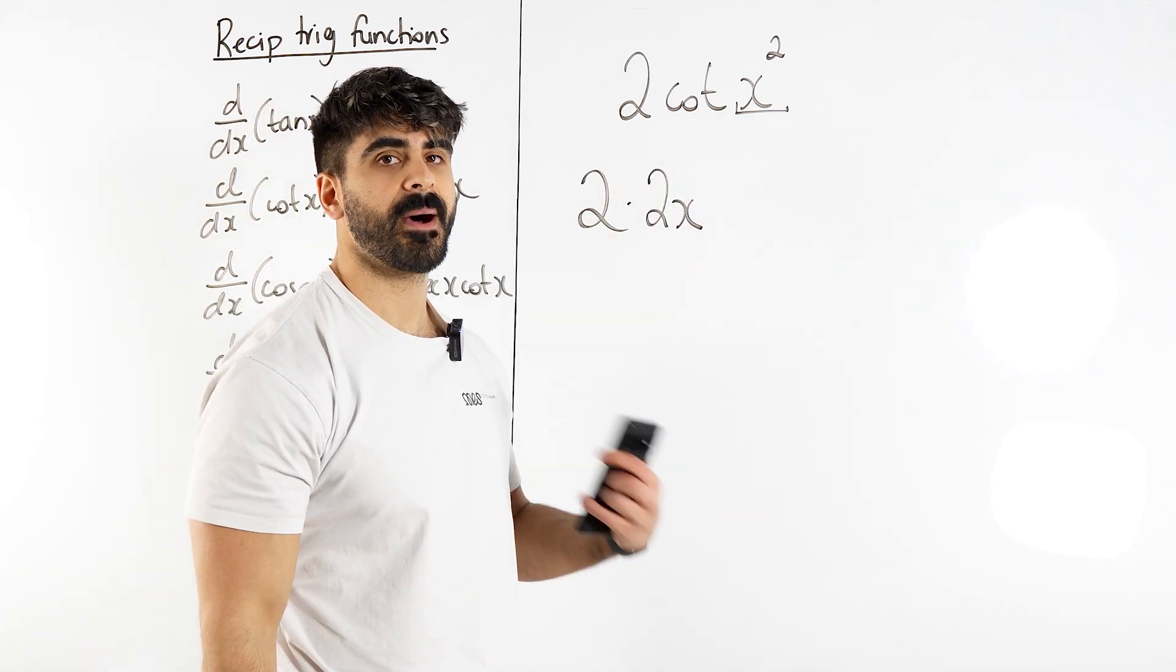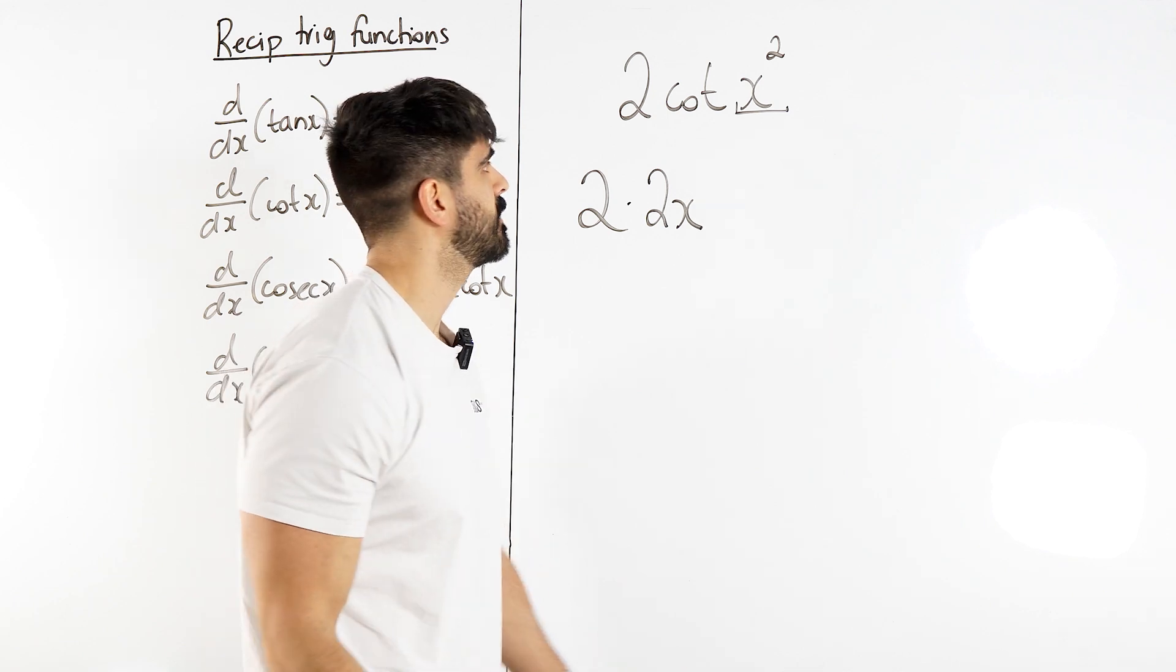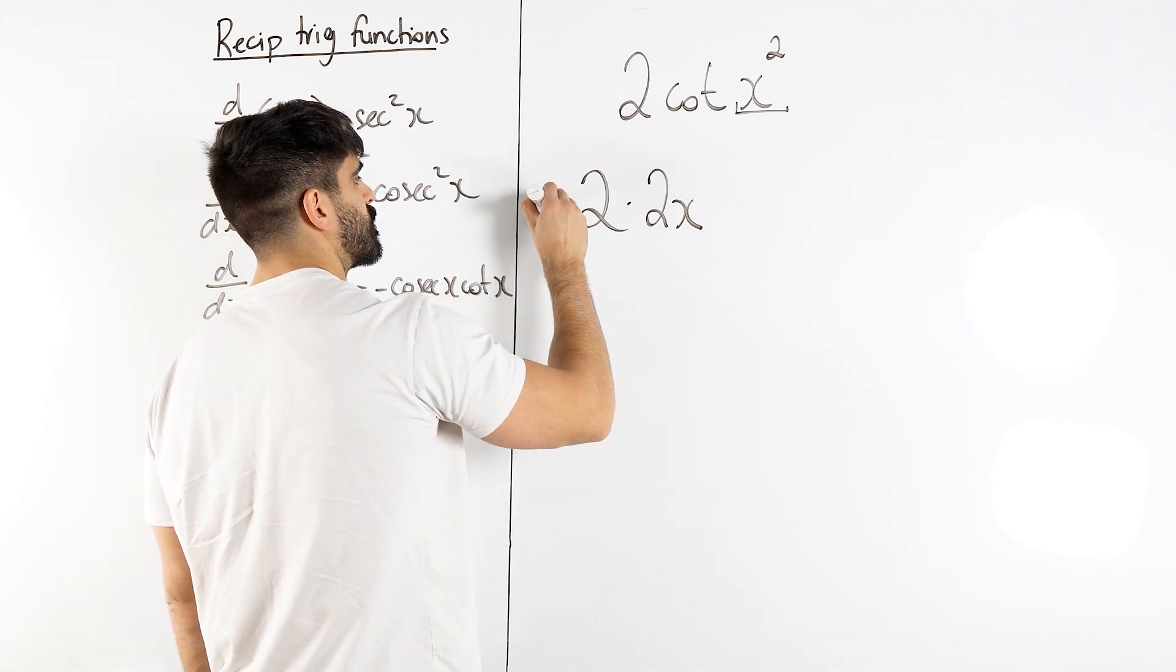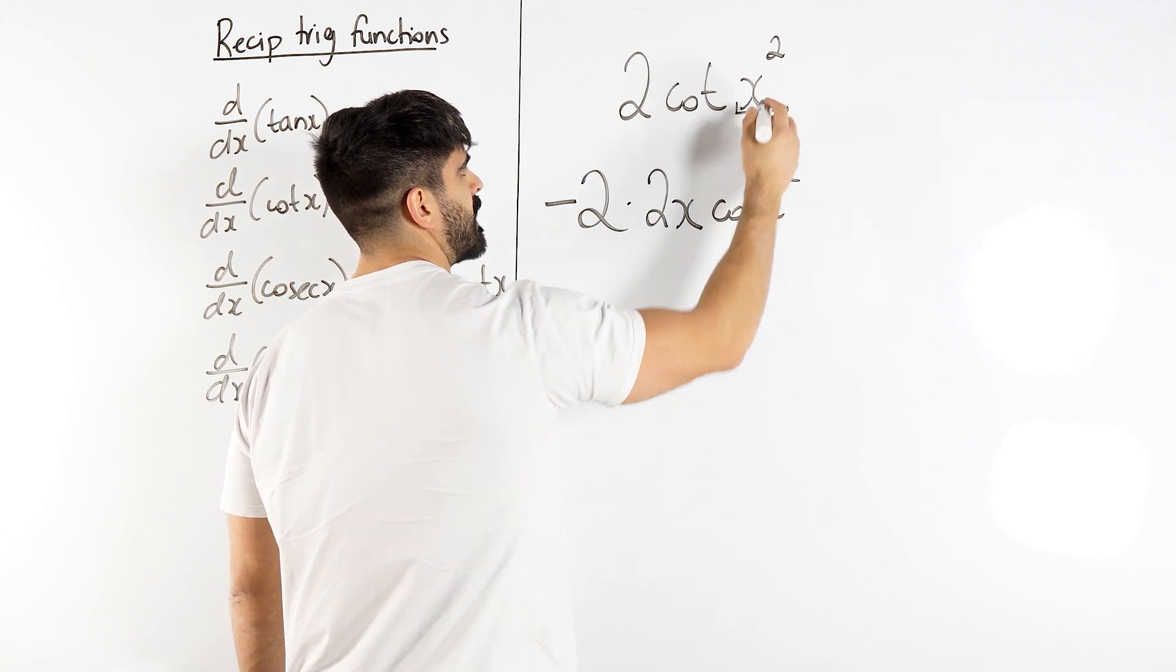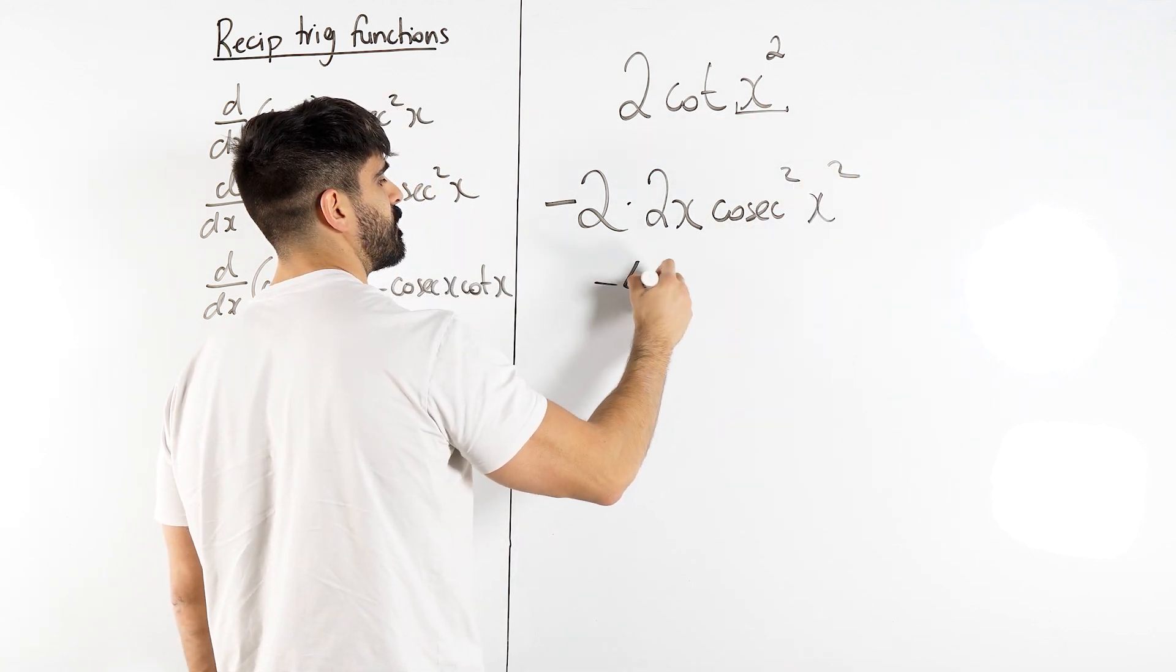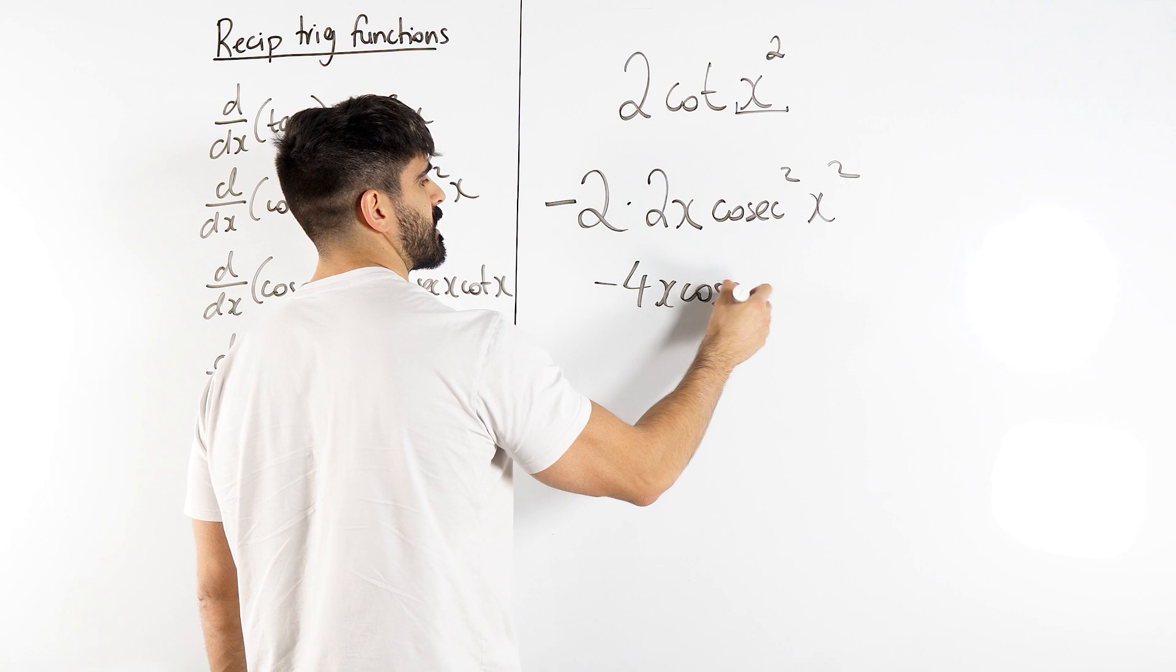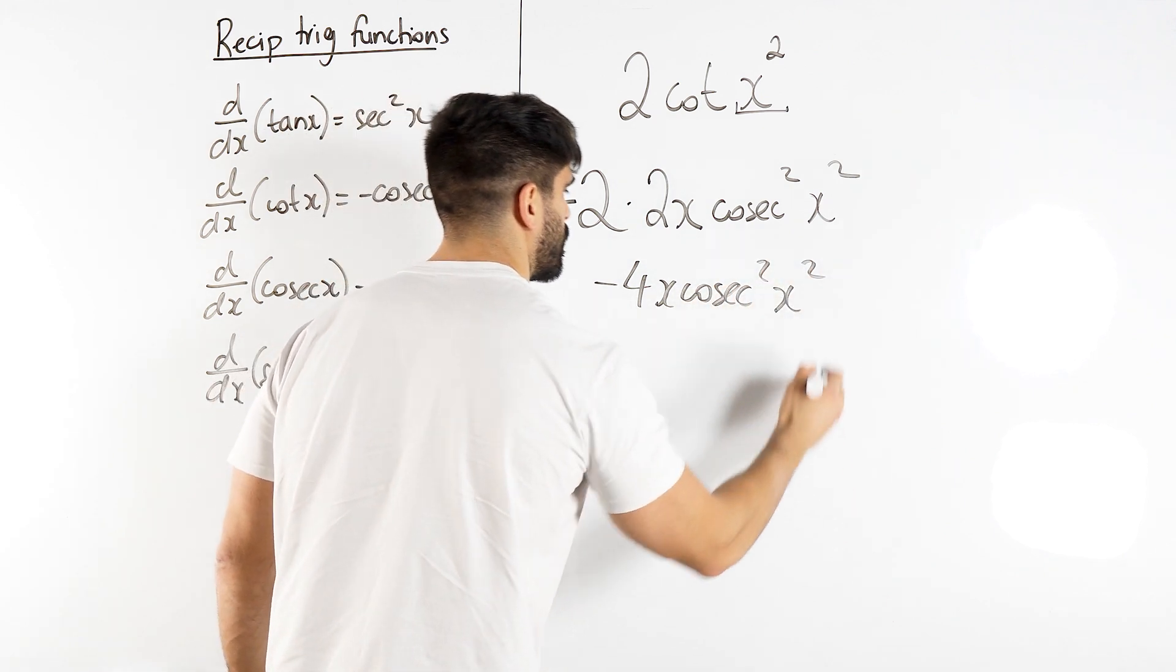Then cot goes to minus cosec x squared, angle stays the same. We get minus 4x cosec squared x squared. Beautiful mate.